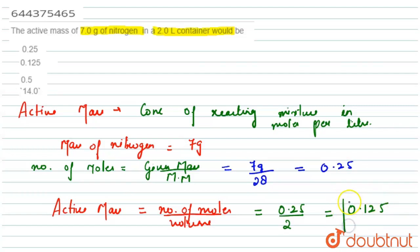Thus the active mass of nitrogen in 2 liter container is 0.125. Hence out of the given options, the correct option is option 2, that is 0.125. Thank you.